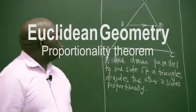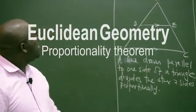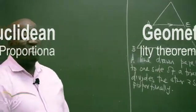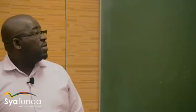Let's continue with our Euclidean Geometry. In particular, I want us to look at the Grade 12 theorems — both the proportionality theorem as well as the similarity theorem. I want us to start with the proportionality theorem. It is important that the theorem is also examinable.